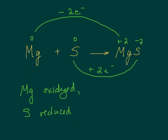Magnesium, because it was oxidized, is called the reducing agent. And sulfur, because it was reduced, is called the oxidizing agent.